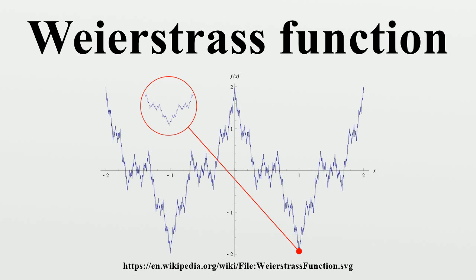Naively, it might be expected that a continuous function must have a derivative, or that the set of points where it is not differentiable should be small in some sense. According to Weierstrass in his paper, earlier mathematicians including Gauss had often assumed that this was true. This might be because it is difficult to draw or visualize a continuous function whose set of non-differentiable points is something other than a countable set of points.